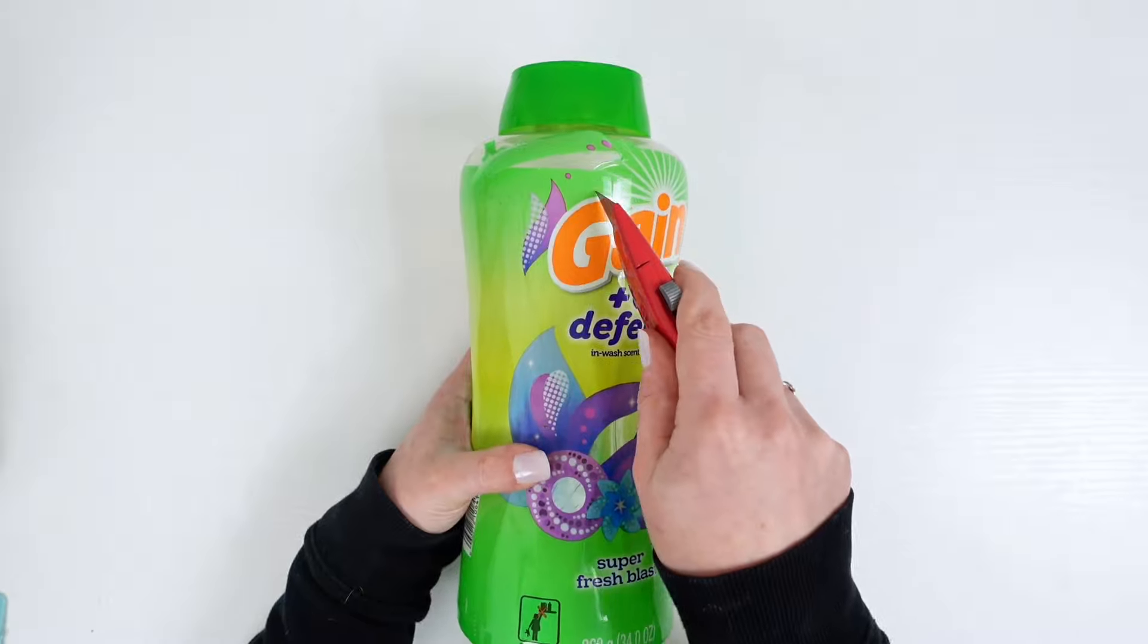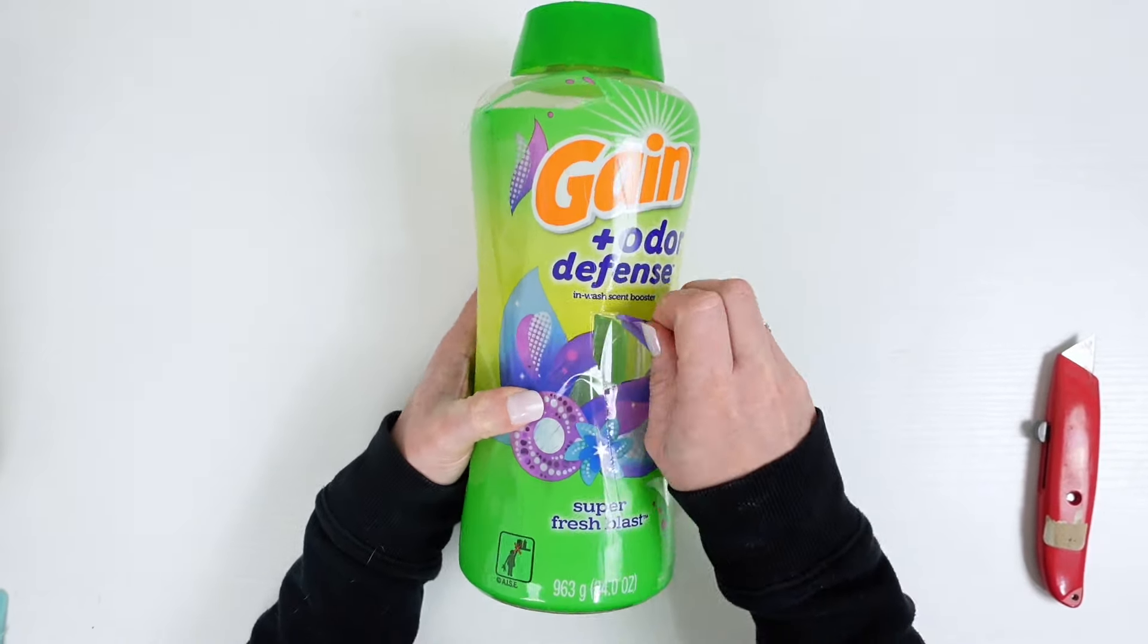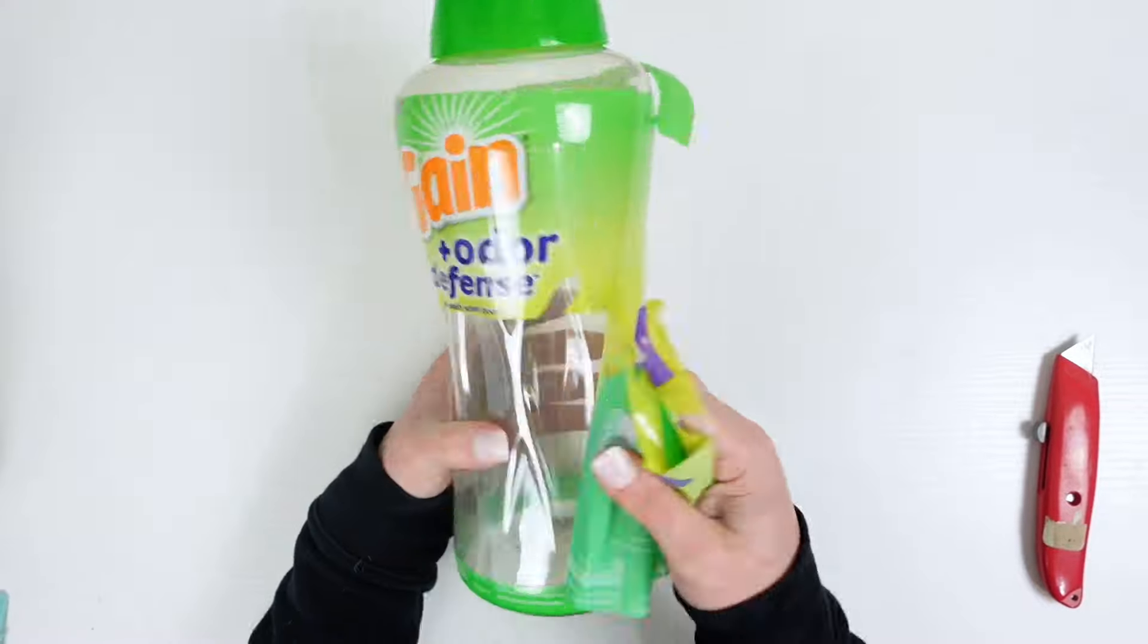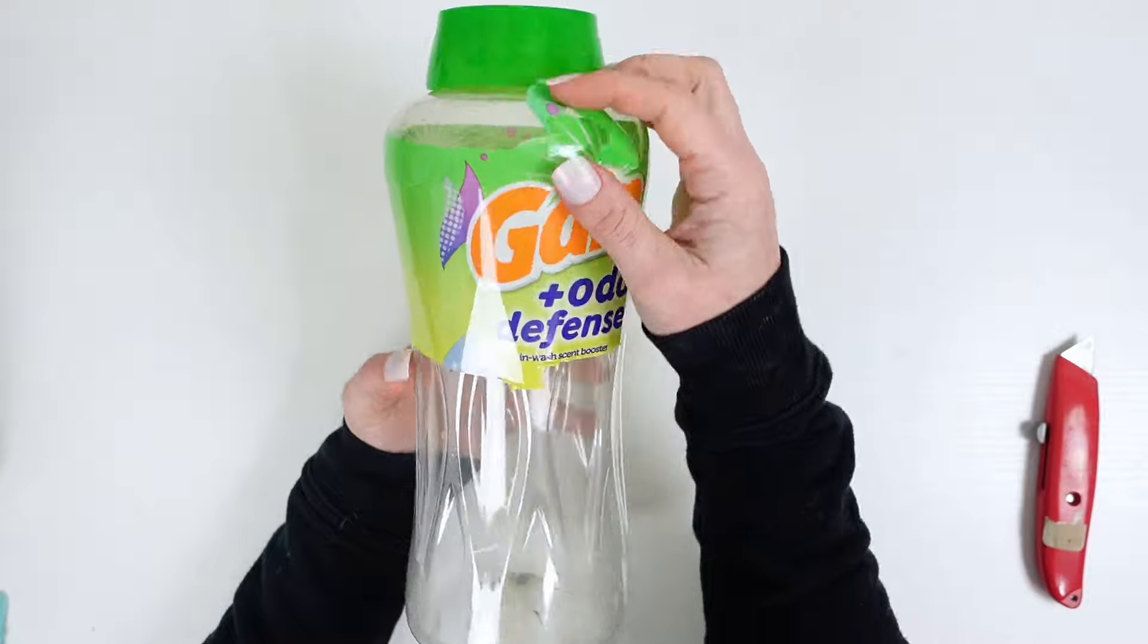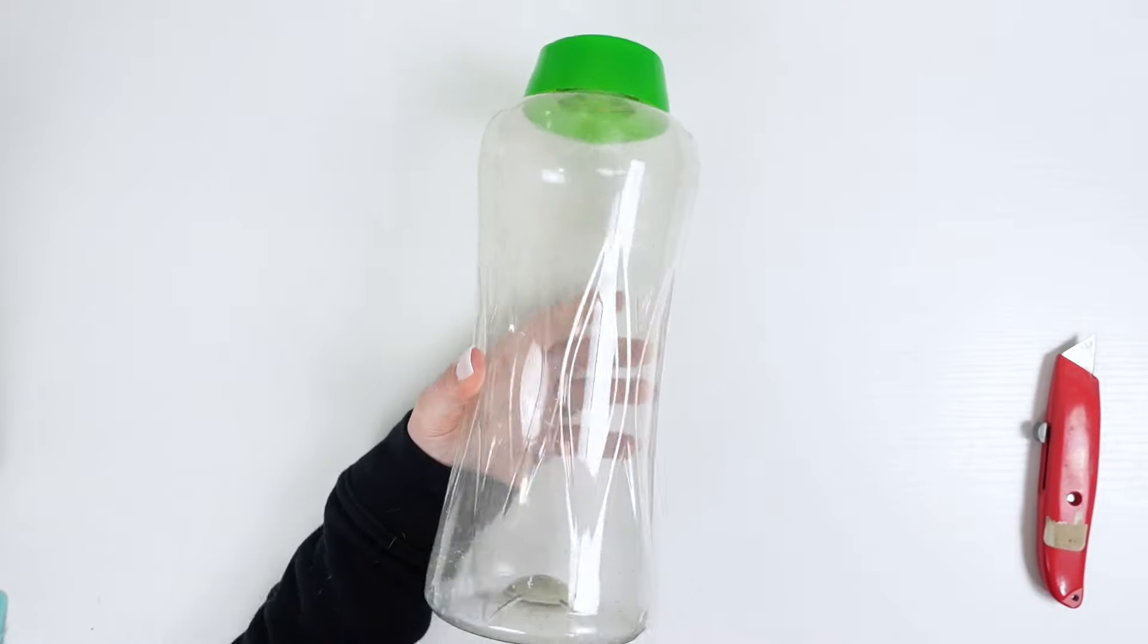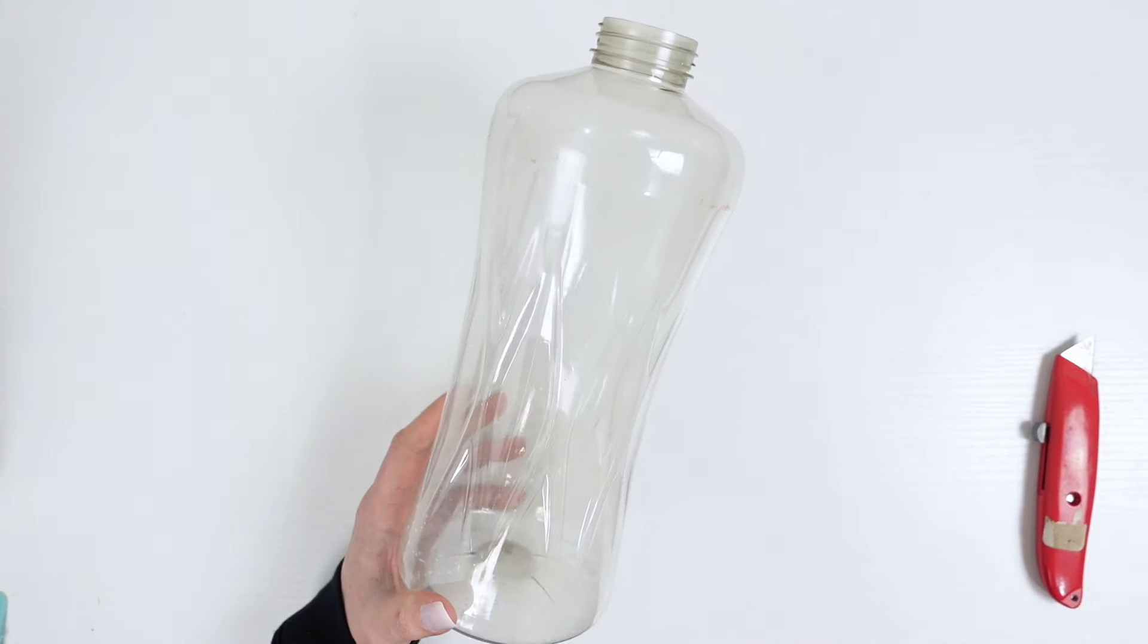The first thing we're going to do is remove the wrapper from this. So I used my X-Acto knife and cut a very light strip going down. I didn't want to cut into the plastic, only into the wrapper. That way it was just a little bit easier to remove.